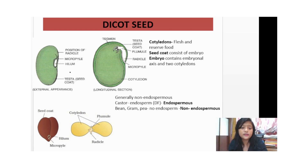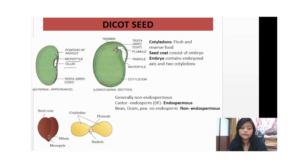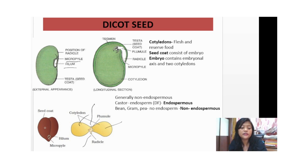Looking at the parts of a dicot seed: the hilum is present, the micropyle is present, and the testa and tegmen form the seed coat. The cotyledons provide the food portion. The embryo contains an embryonal axis, and on either side of the axis two cotyledons are present. The lower part forms the root (radicle) and the upper part forms the shoot (plumule). You can see the micropyle and the shoot rising out in another example diagram.